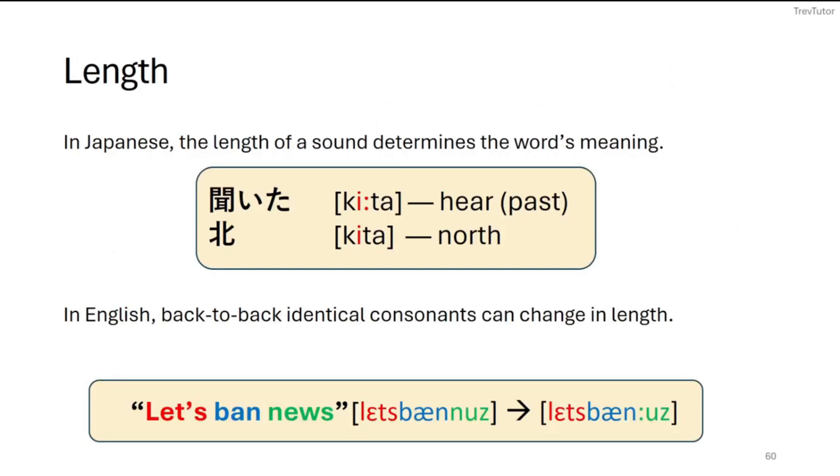Now length is another one that we don't consider too much in English. But if you think about Japanese, length is actually going to make a difference in the word that is being produced. So for example, we have two words here, kiita and kiita. So in the first word, if we make the e longer, kiita, this means here, and the specific form would mean the past. But if we make the shorter and just say kiita.